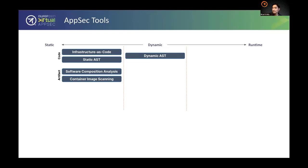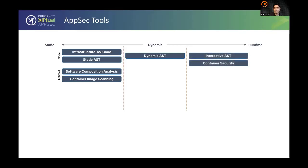Dynamic scanners like DAST — OWASP ZAP is a great example — scan the application from the outside by sending payloads and analyzing request/response to identify OWASP Top 10 issues like cross-site scripting and SQL injection. On the runtime side, interactive AST tools like Contrast Security, designed about a decade ago, instrument a language-specific agent — Java agent, .NET agent — to get visibility from inside the running application. Container security tools like Aqua or Prisma Cloud use sidecars or process visibility to observe containerized application runtime behavior.